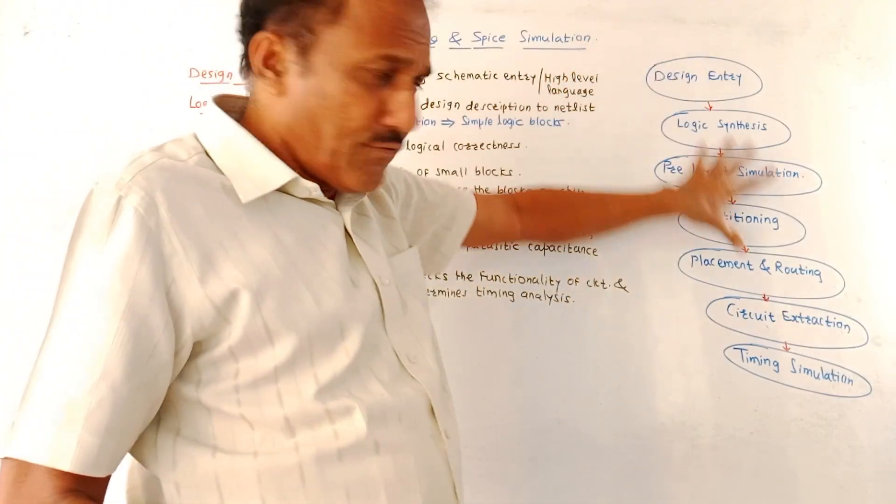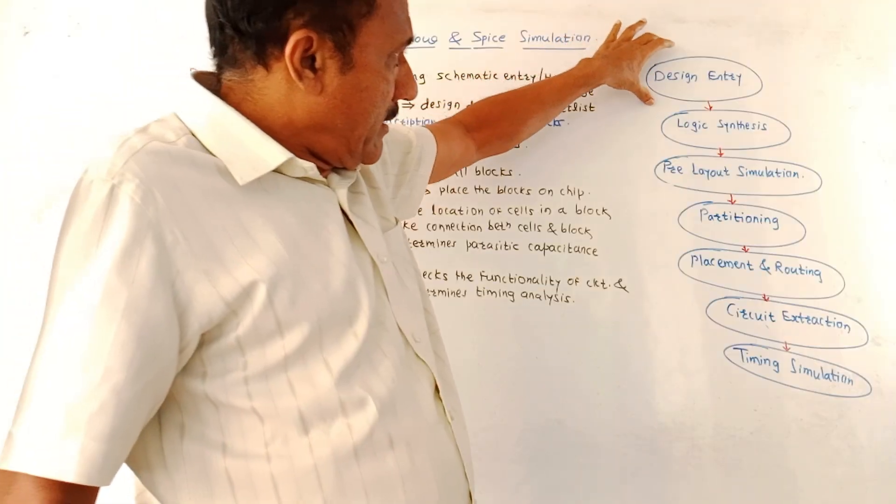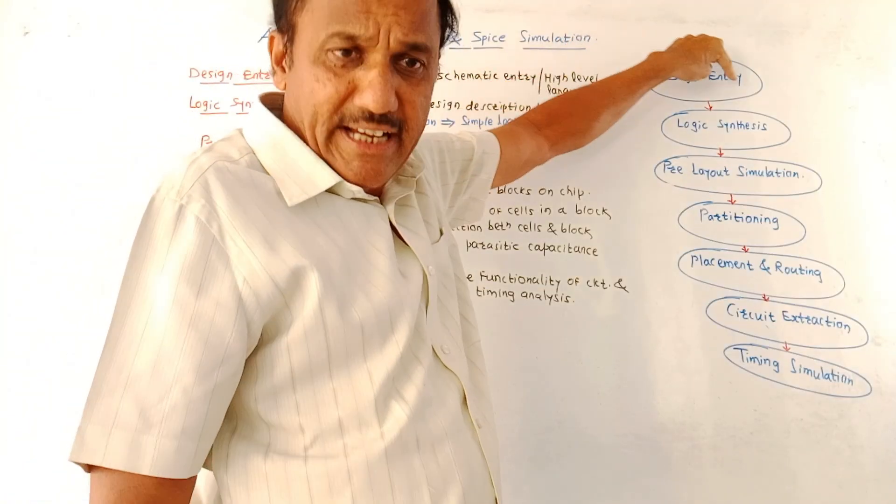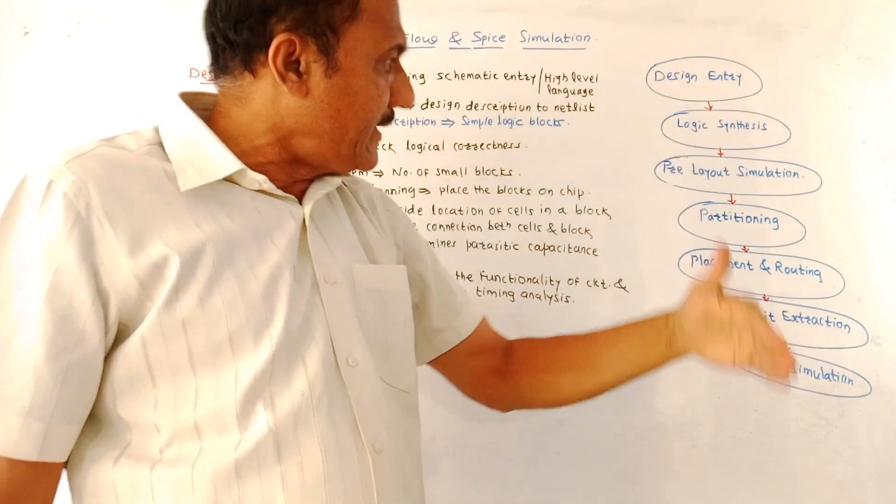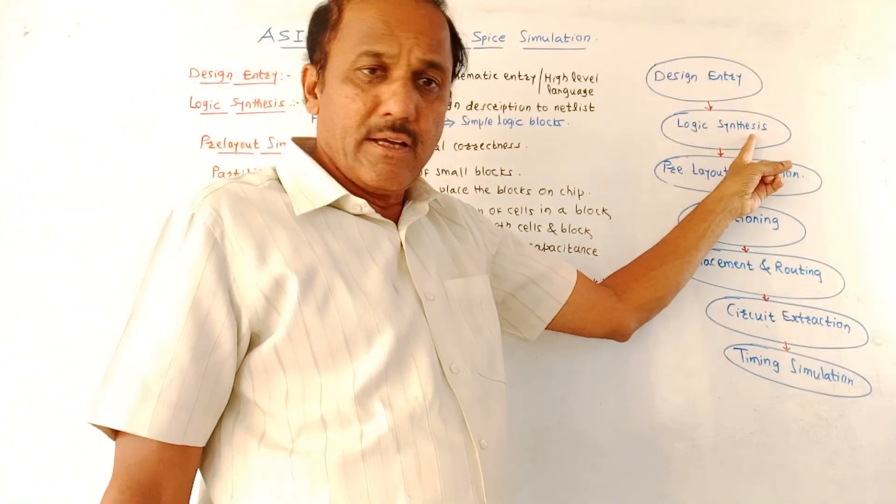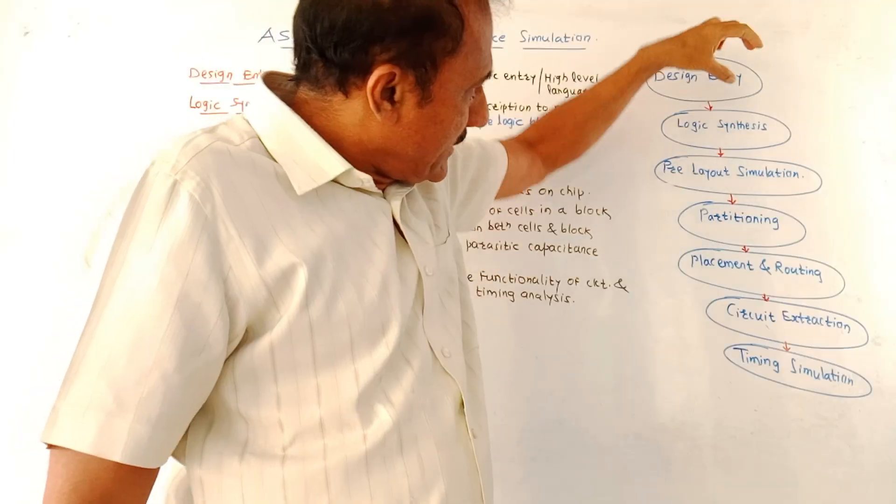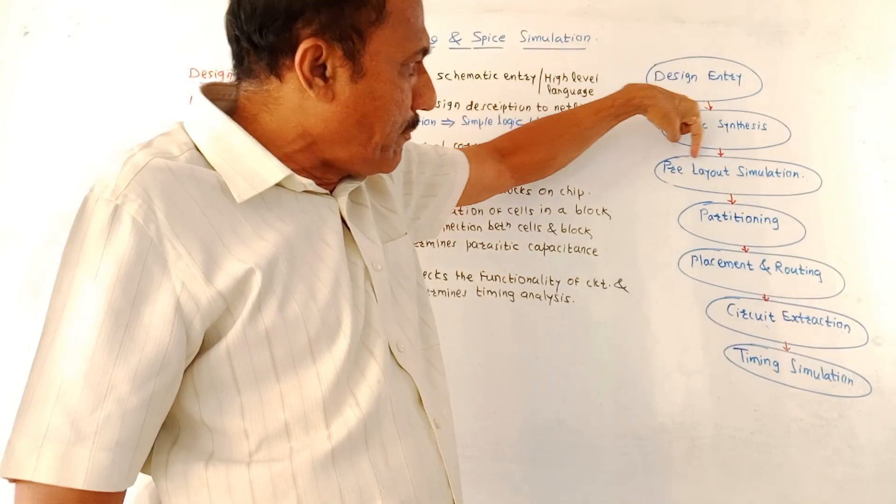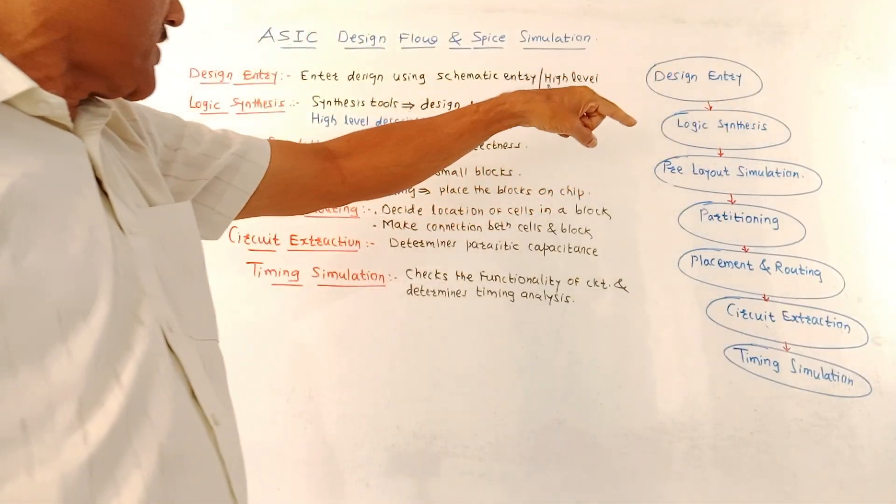So this is the flowchart. It is comparatively very simple. First block is design entry. As the name indicates, we have to enter the design specifications. Then it is synthesized using certain logical techniques.